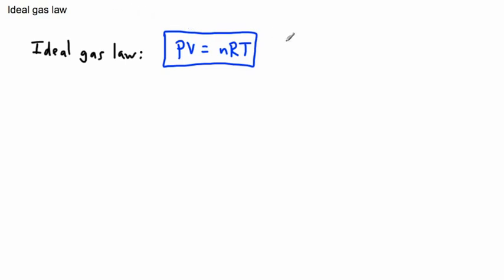We better define the different things here. We have P, which is the pressure, measured in pascals. We have V, which is the volume, the size of the space that it actually occupies in three dimensions, so this would be in meters cubed.